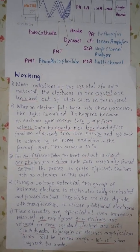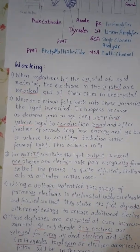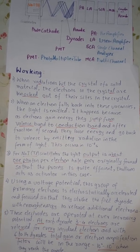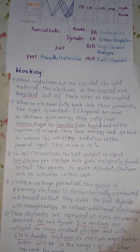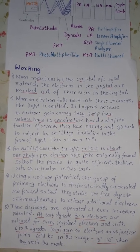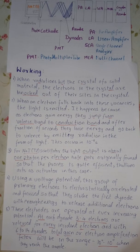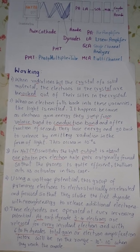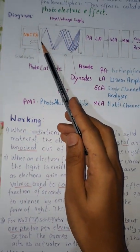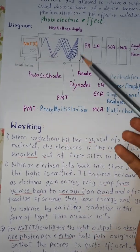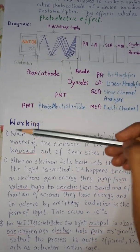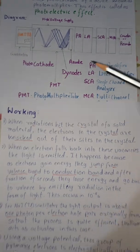For NAITL scintillator, the light output is about 1 photon per electron hole pair originally formed so that the process is quite efficient. Here the thallium acts as activator. Using a voltage potential, this group of primary electrons is electrostatically accelerated and focused so that they strike the first dinode with enough energy to release additional electrons. When the electrons are excited, they hit at the dinode and there are secondary electrons generated. These secondary electrons again hit the next dinode and again there are secondary electrons produced and hence they multiply in this manner.